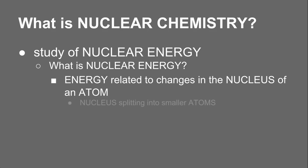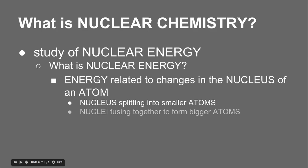Now there are two ways this can happen. One, a nucleus can split into smaller atoms, which releases energy. Or nuclei can fuse together to form bigger atoms. This first one would be fission — a nucleus splitting into smaller atoms — and the second one, the fusing together, would be fusion. We're going to talk about those a little bit later.